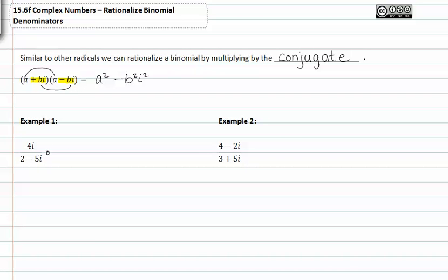In example one, we can multiply by the conjugate or the opposite of two minus five i. This is two plus five i. Whatever we multiply in the denominator, we must multiply in the numerator as well, so that we multiply by something that's equivalent to one.